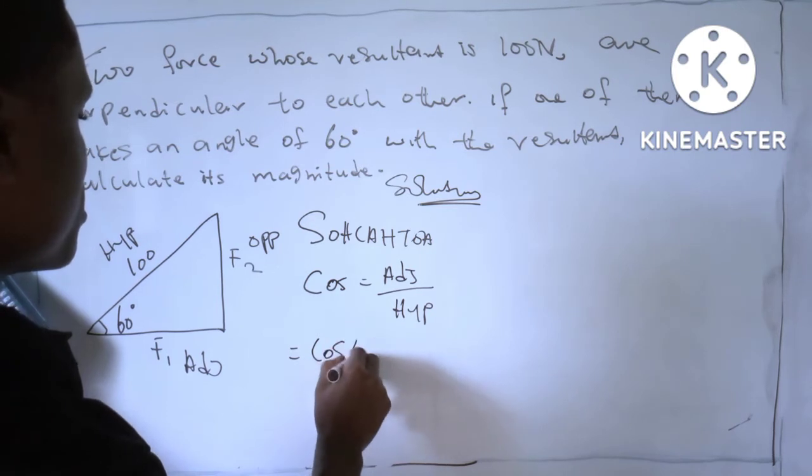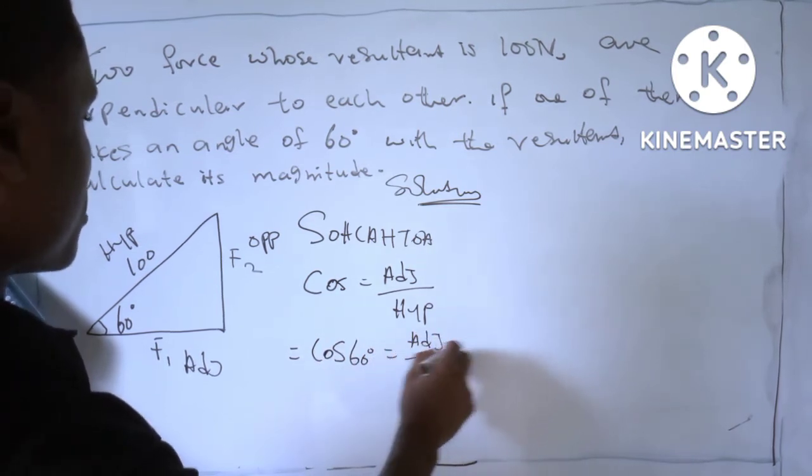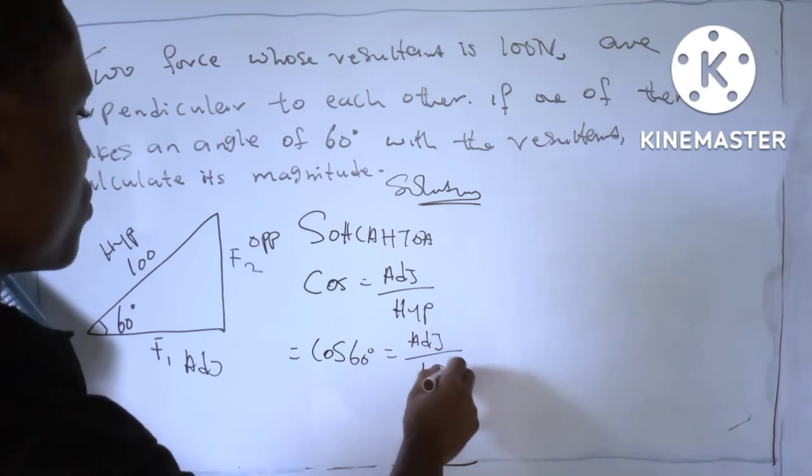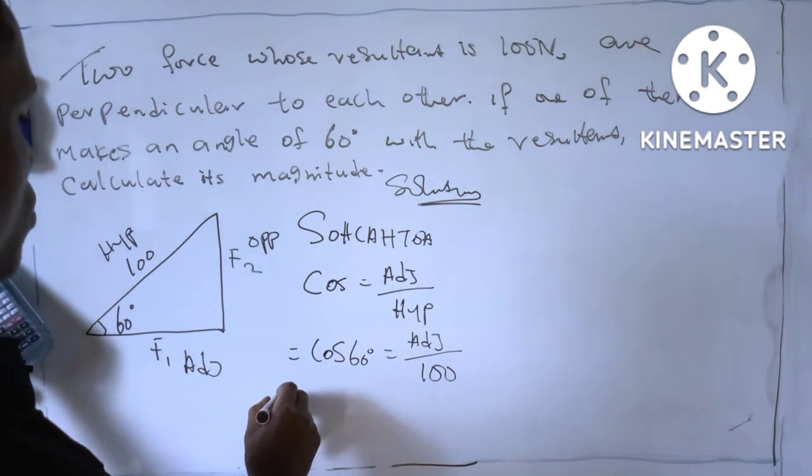So we have cos 60 degrees equals adjacent over the hypotenuse, which is 100. Multiply this by 100.